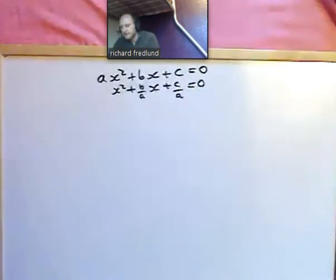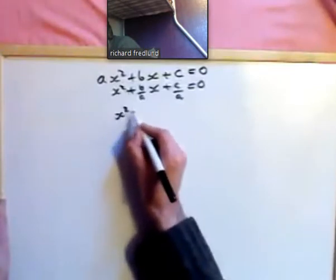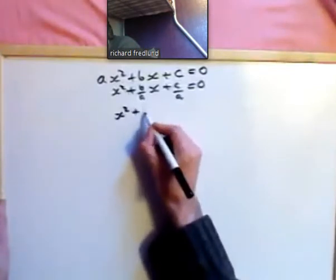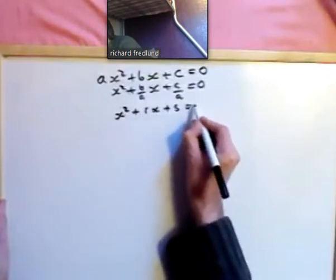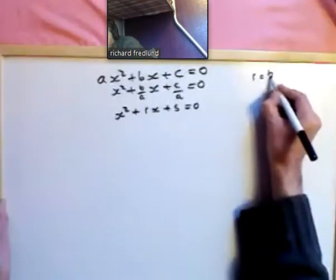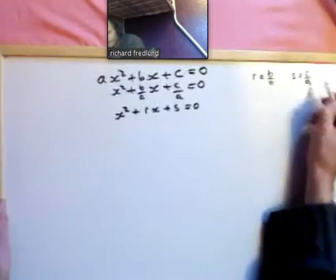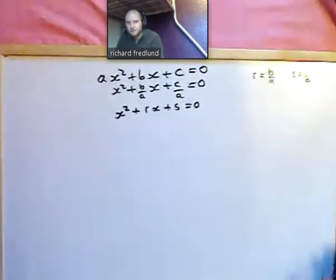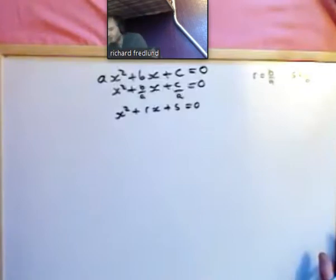Just for convenience, let's say this is x squared plus rx plus s equals zero. We'll remember that r is equal to b over a and s is c over a, because it just makes it a lot easier in terms of the writing to see what's going on.